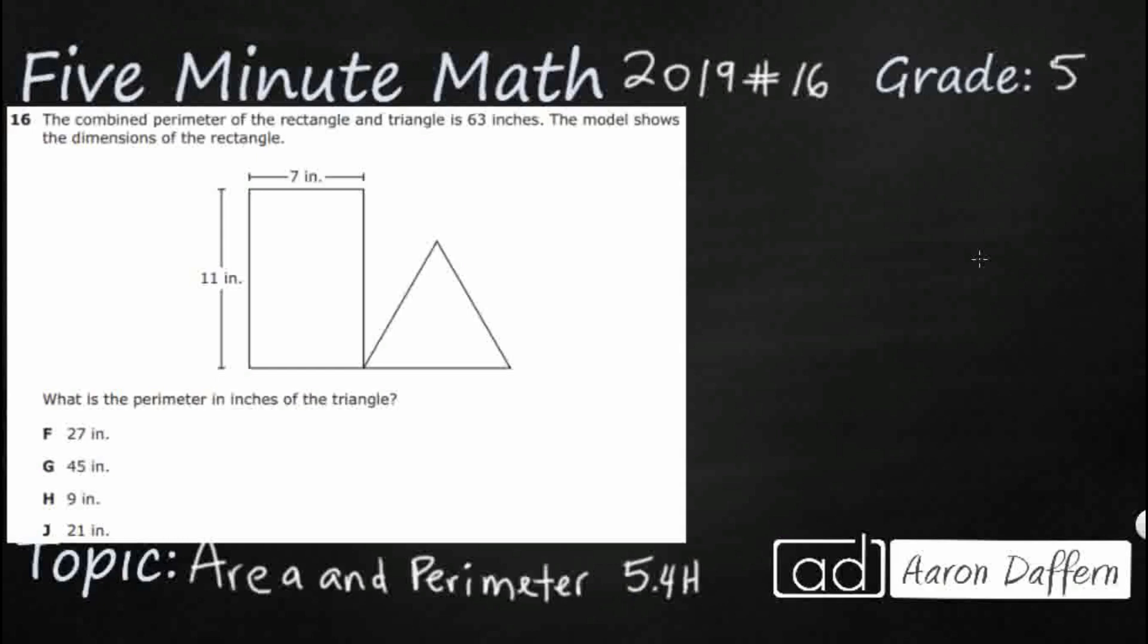So we have the combined perimeter, that's going to be very important, of this rectangle and the triangle. The combined perimeter is 63 inches. We have a few dimensions here on the rectangle, nothing on the triangle. And we need to find the perimeter, just the perimeter, not a side length, of in inches of the triangle here.